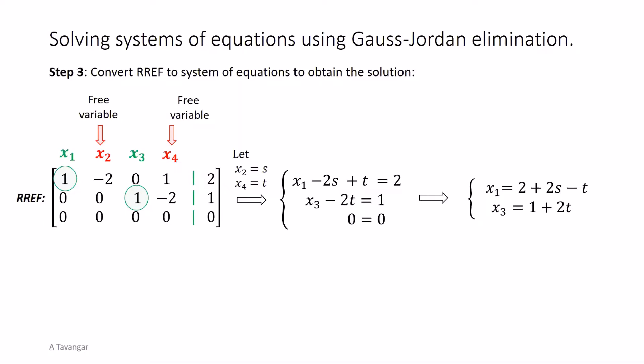Putting x1, x2, x3, x4 together we get the general solution. All the variables are given in terms of parameters s and t where s and t are arbitrary real numbers. Therefore, for any value of s and t we select, x1, x2, x3, and x4 will be given by these equations.